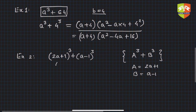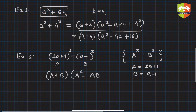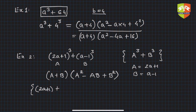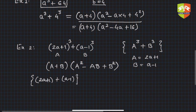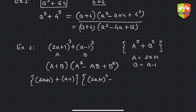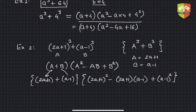We can adopt the same identity to factorize it. Calling the first term A and the second term B, it will be (A + B)(A² - AB + B²). Deploying the values: the first factor is (2a + 1) + (a - 1), and the second factor is (2a + 1)² - (2a + 1)(a - 1) + (a - 1)².